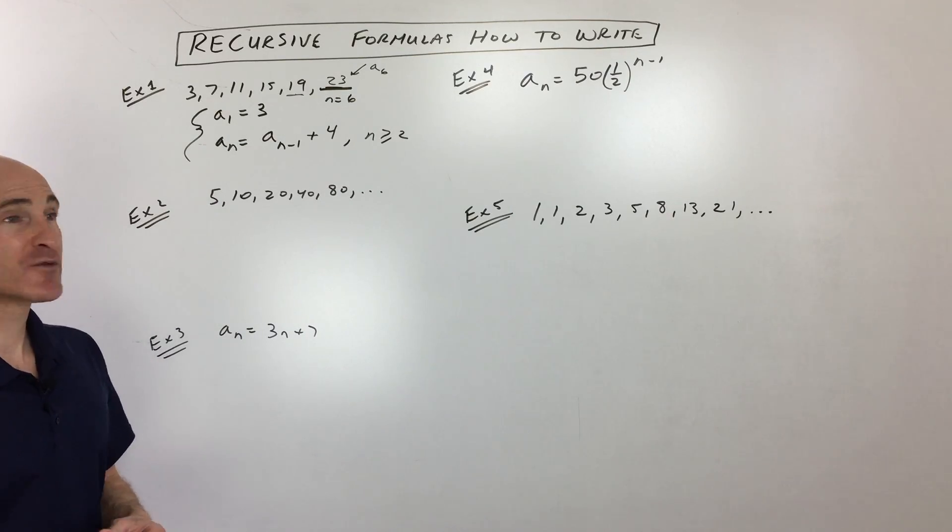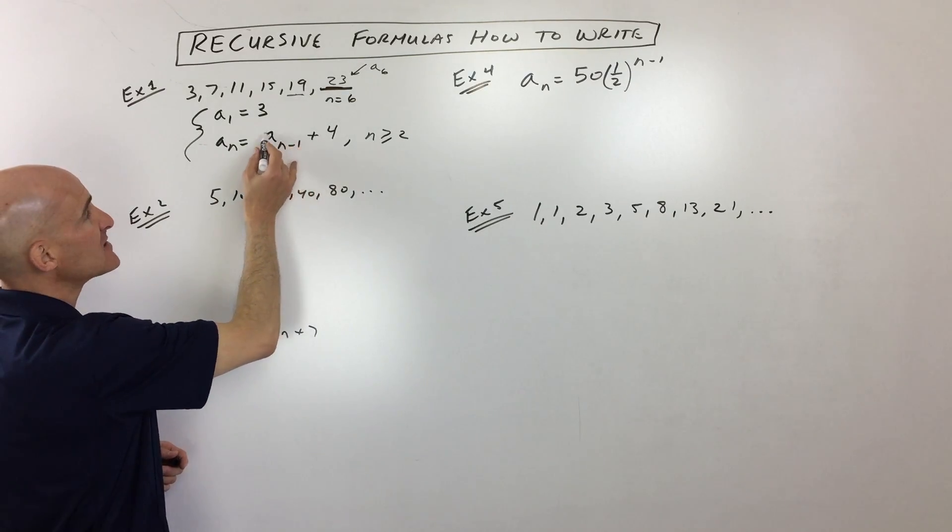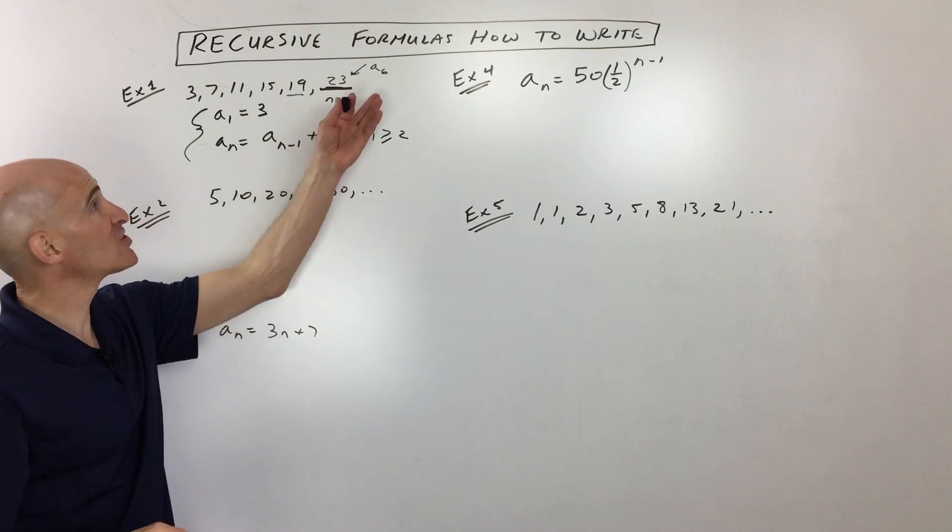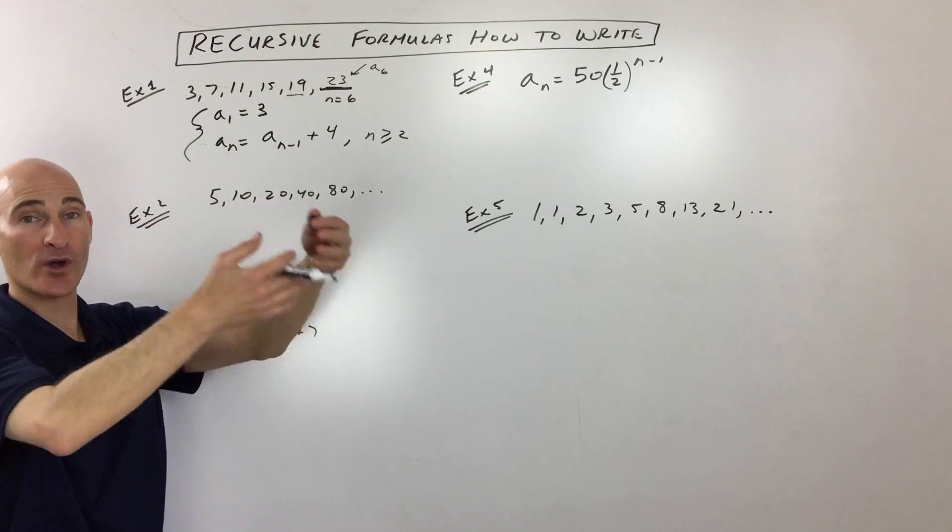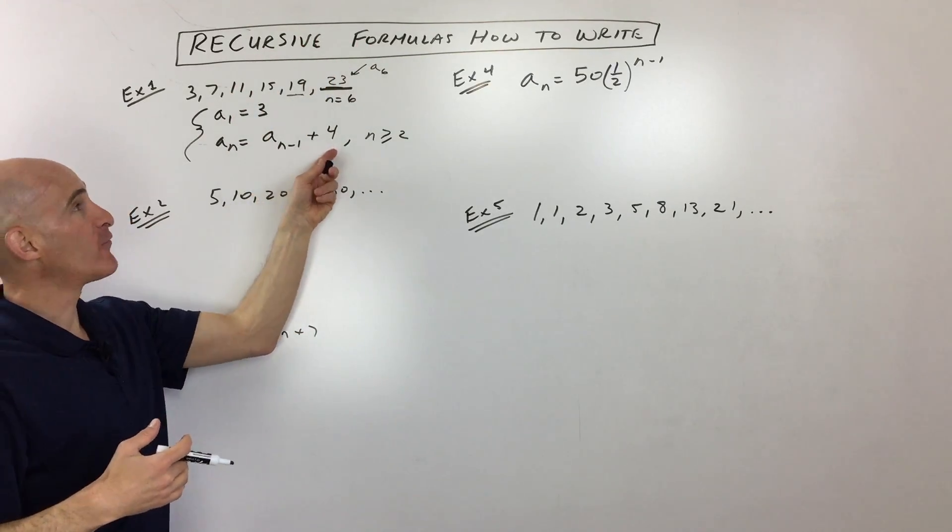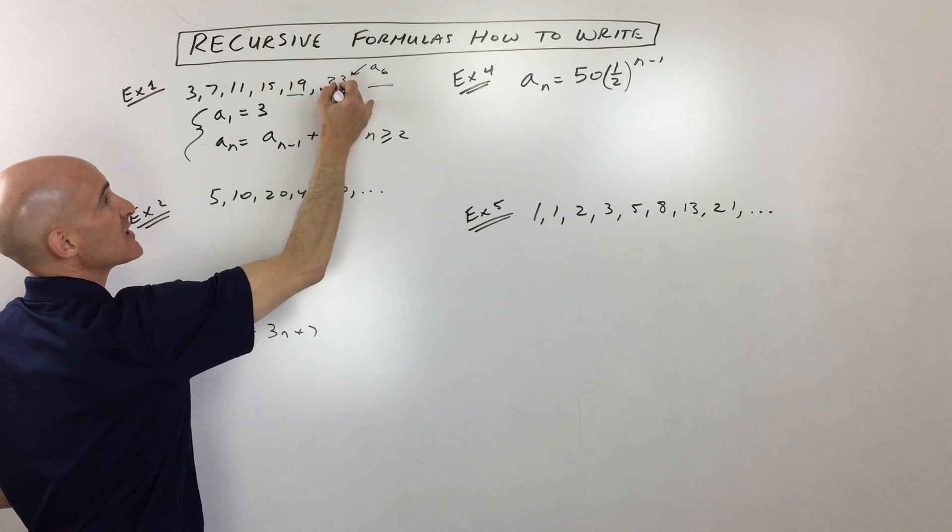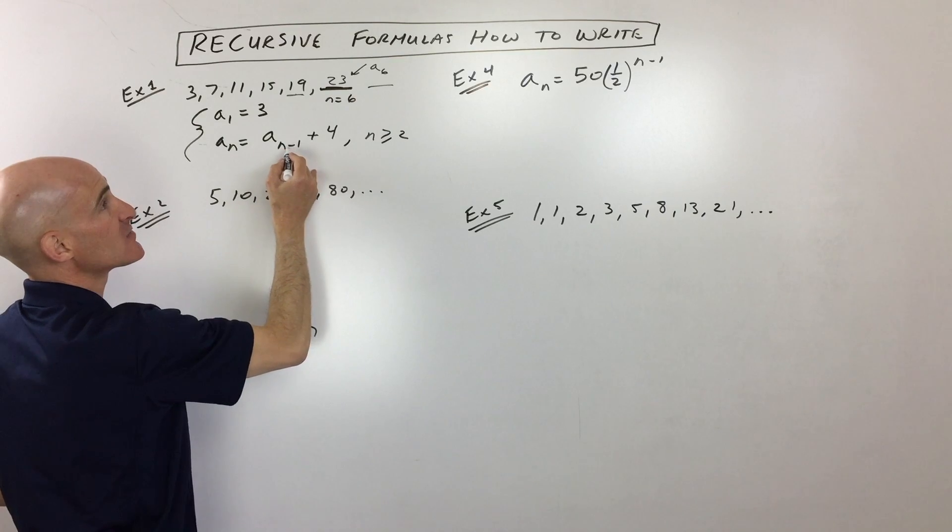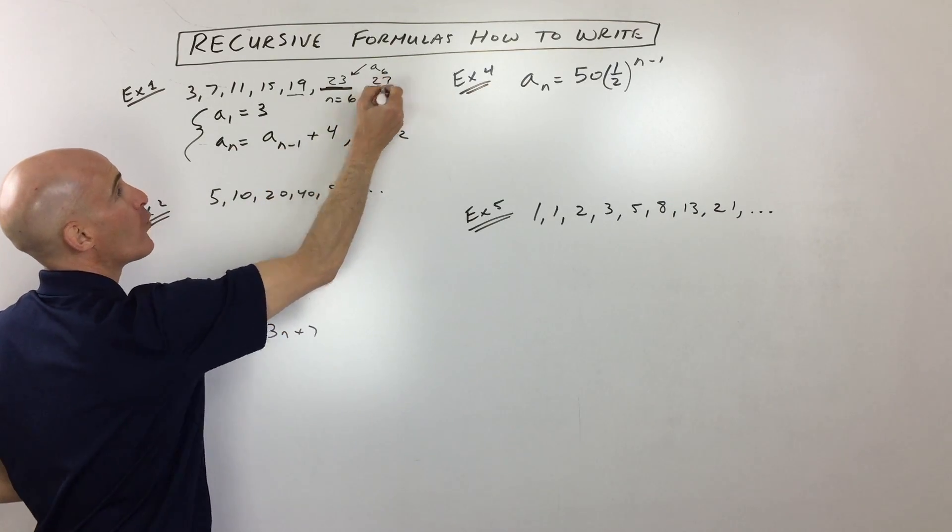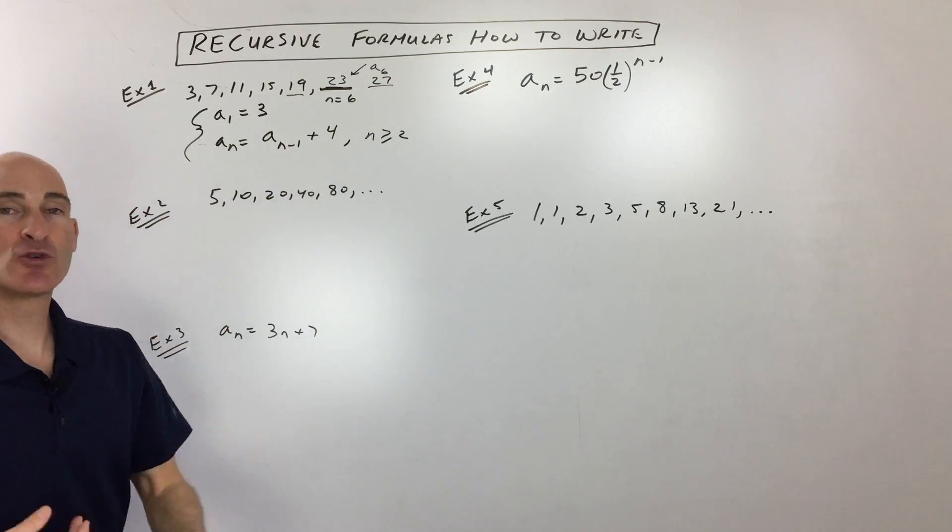But after you get used to doing these formulas for a while, you'll just realize when I see that a sub n minus 1, that means just to go one term back, one term before, add 4 and repeat. So if I want a sub 7, I go to a sub 6, which is 7 minus 1, a sub 6, the one before, plus 4 more, and I get 27.